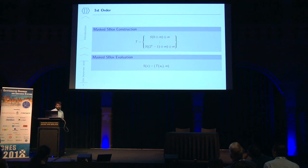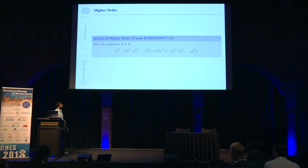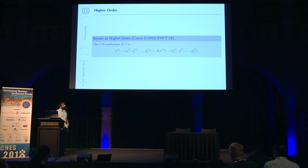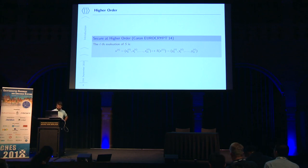When you want to perform such a secure evaluation at higher order, things get more complicated. We had to wait until 2014 to get a secure solution proposed by Jean-Sébastien Coron. In this case, all the shares are independent in both the input and the output — there are no common shares. The solution was proven with 2T+1 shares instead of T+1.